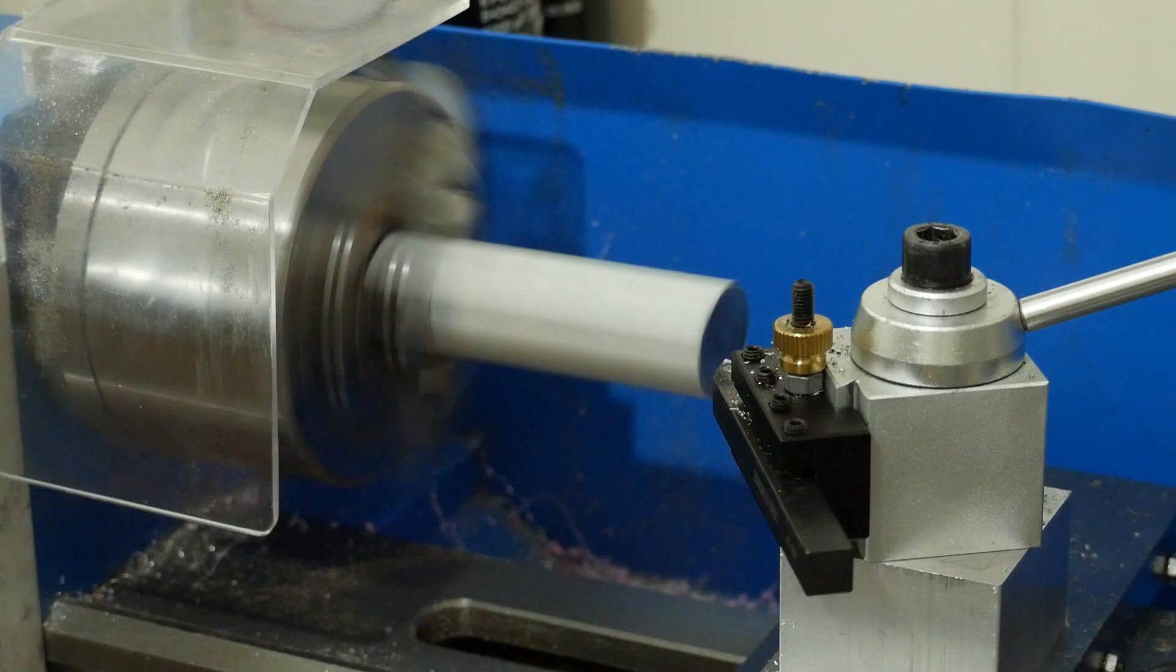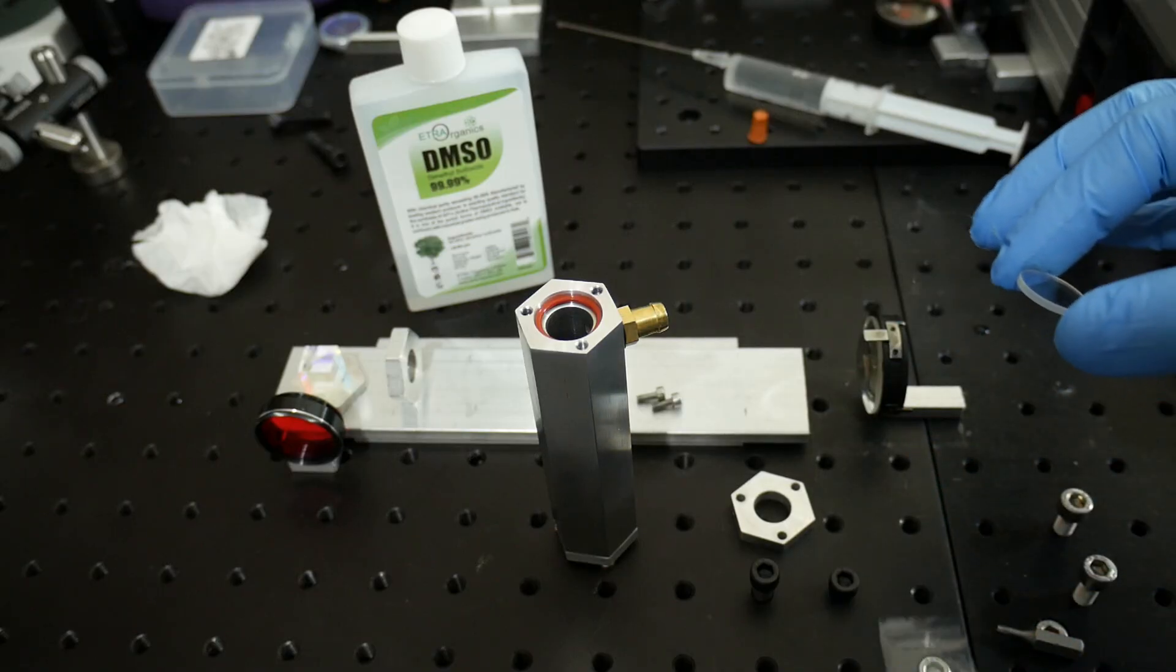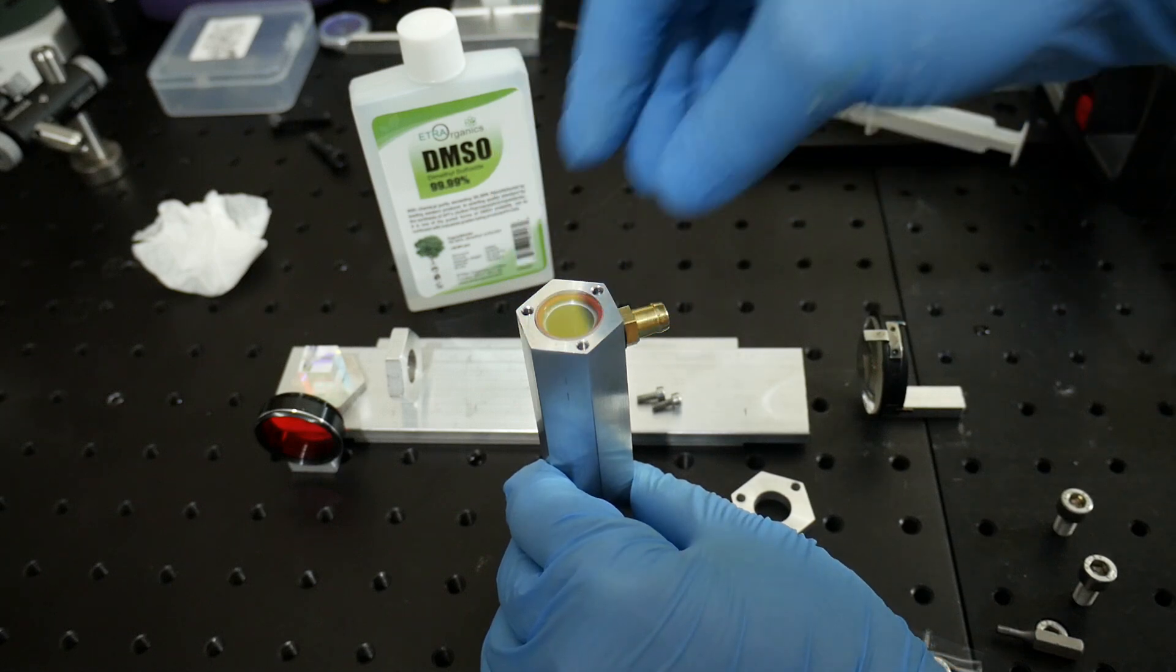I decided to machine a cell from hex aluminum bar stock. I bored out the center, added recesses for O-ring seals, added a filling barb and made end pieces to hold the windows in place.